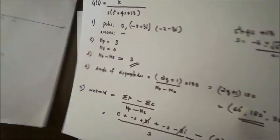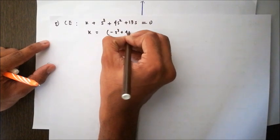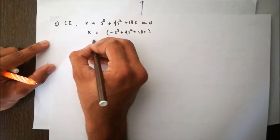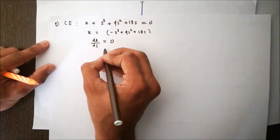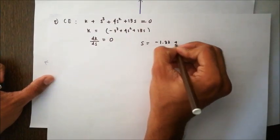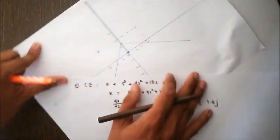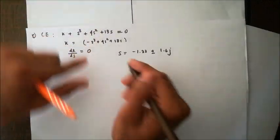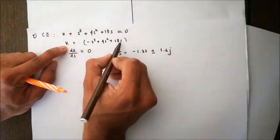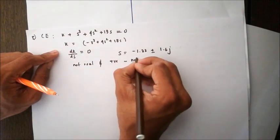Next, we find the breakaway points. We write the characteristic equation and find k = -s³ + 4s² + 13s. When we differentiate and equate to 0, I get (writing directly to save time) s = -1.33 ± 1.6j. For real roots, we check if they form part of the root locus. Another method is to substitute these values in the equation for k and check if it is real and positive.